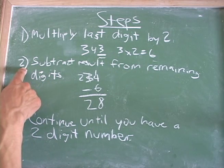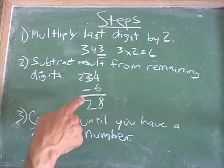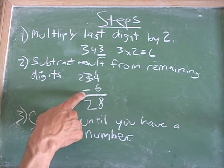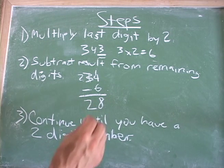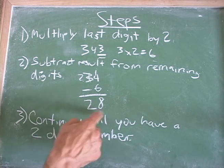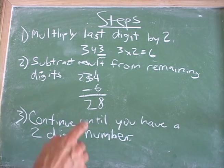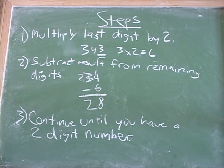Then, second step, we subtract the result from the remaining digits. So our remaining digits are 34. So we're going to subtract 6 from 34, and of course we borrow here to get 14 minus 6 is 8, 2 subtract 0 is 28. So now we have 28. Once we have a two-digit number, we just look and see if this two-digit number is divisible by 7. If it is, then we know that 343 is divisible by 7, and of course 28 is divisible by 7, which means this number here is divisible by 7 as well.